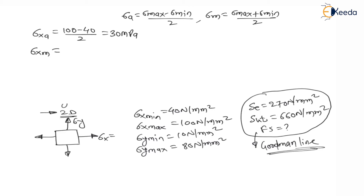The mean stress along the x-direction is σxm = (100 + 40) / 2 = 70 MPa.